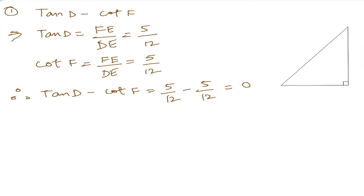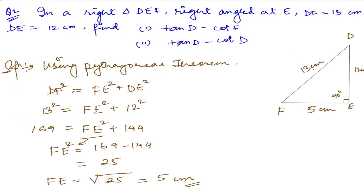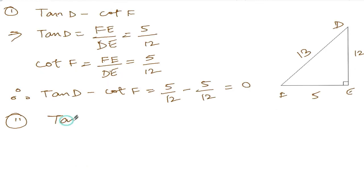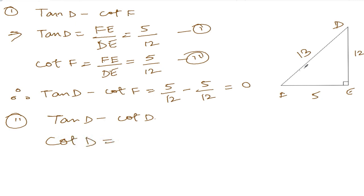Now for part (ii): find tan D minus cot D. From part (i) we already know tan D equals 5/12. Now find cot D. Cot of D is base over opposite, so the base is DE which is 12, divided by FE which is 5. So cot D equals 12/5.